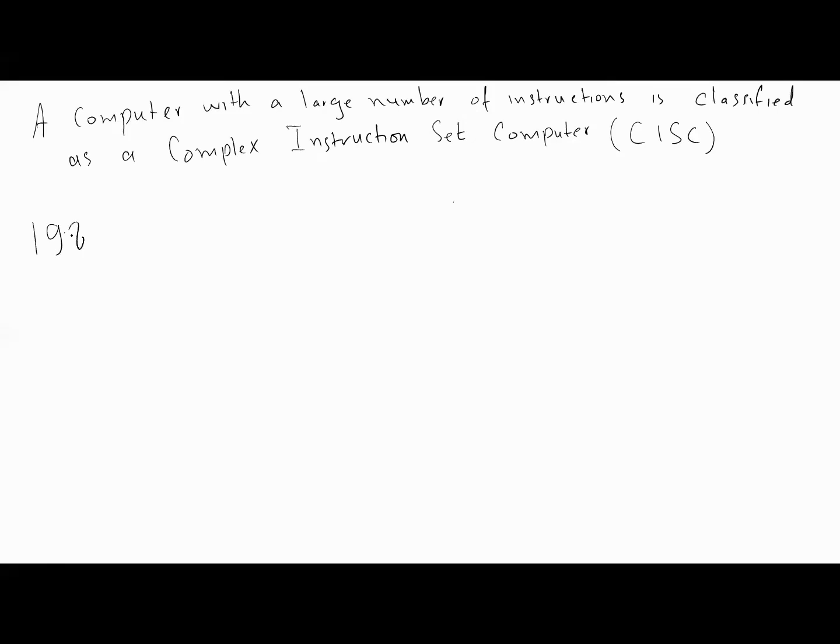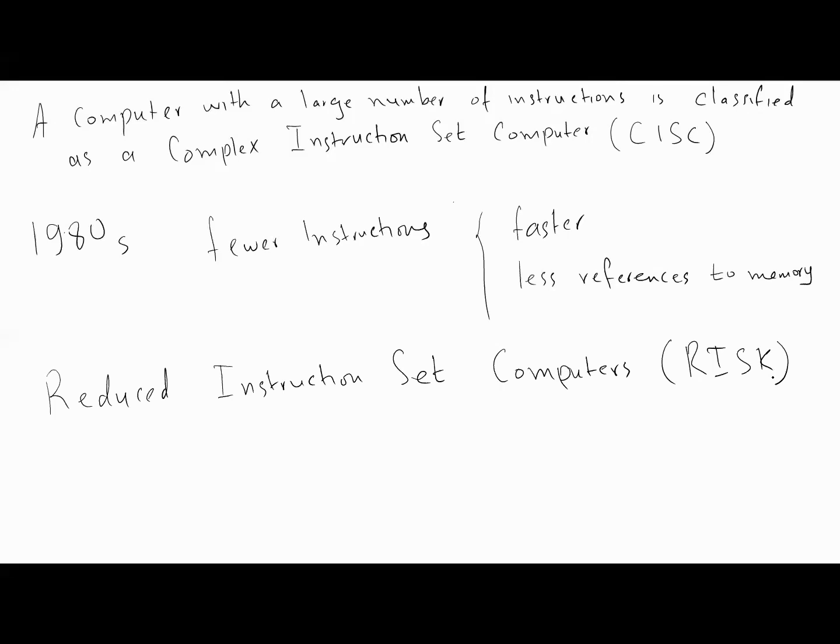In the early 1980s, a number of designers recommended that computers use fewer instructions with simple constructs so they can be executed much faster within the CPU and with less references to memory. This type is classified as reduced instruction set computers, abbreviated RISC.